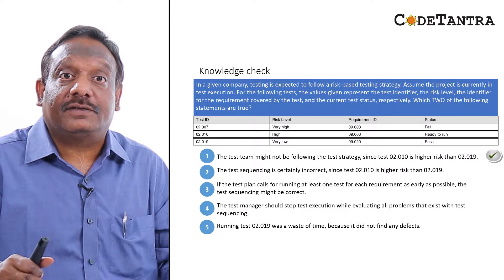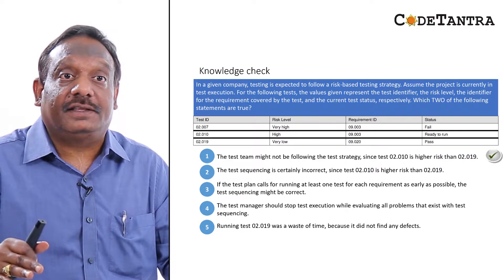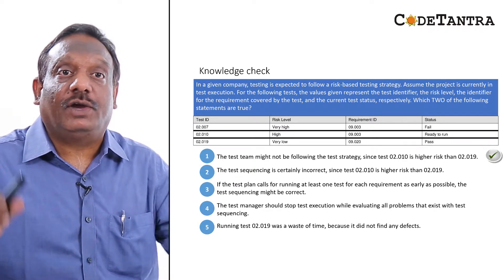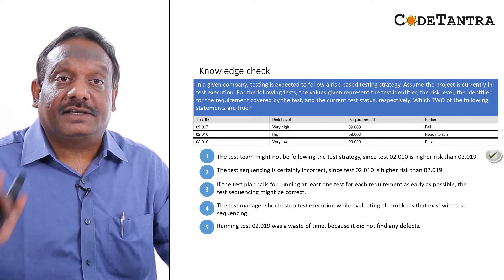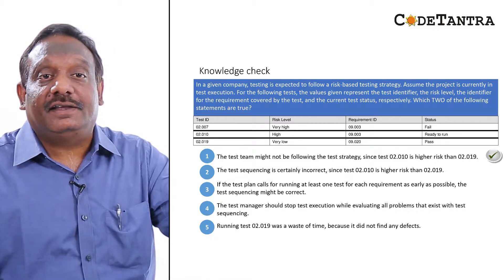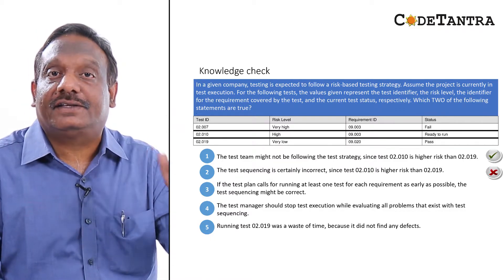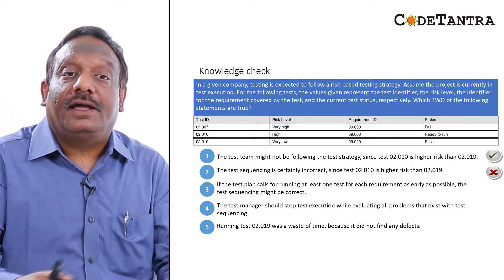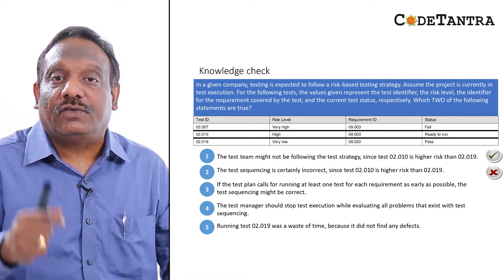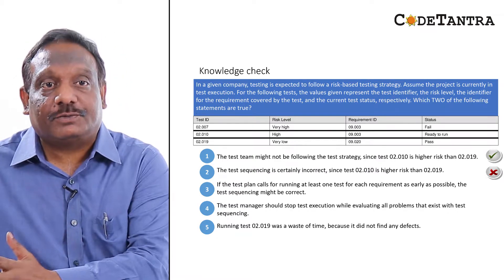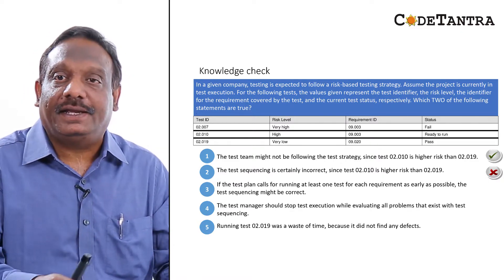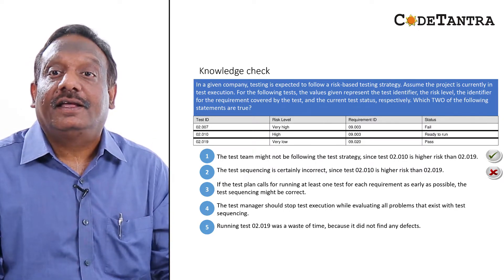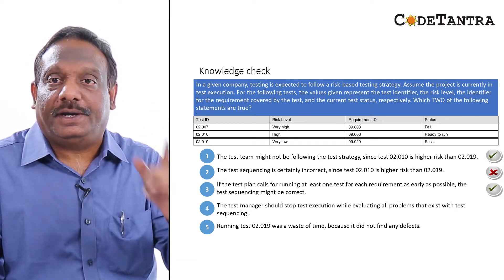Statement two is not correct because the test strategy may specify that every risk level must have at least one test each before moving on. If that is what the strategy is guiding, then saying the sequence is certainly incorrect is not a valid statement. Statement three says if the test plan calls for running at least one test for each requirement as early as possible, the test sequencing might be correct. That is a true statement — it is the reason why statement two is incorrect.